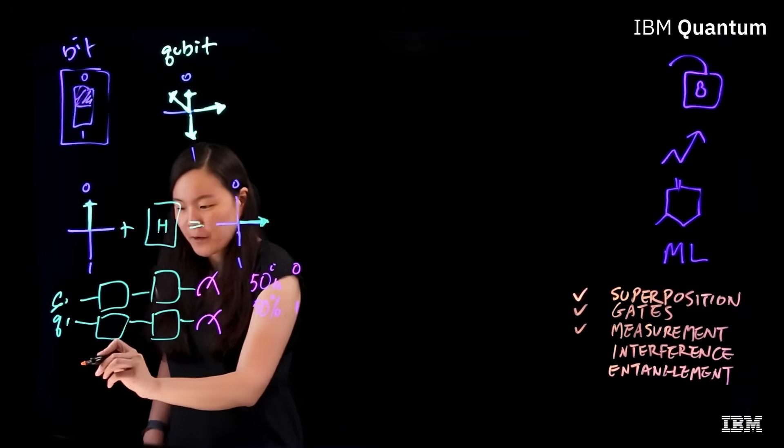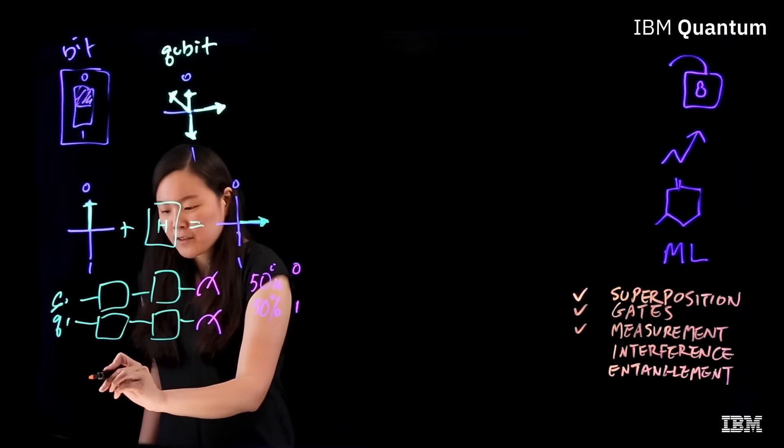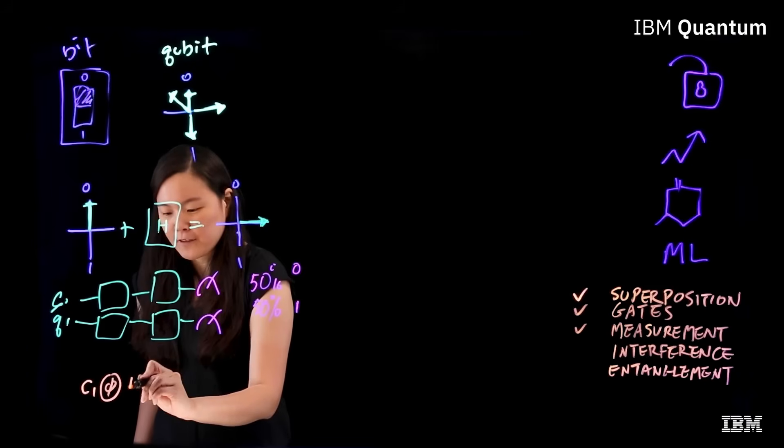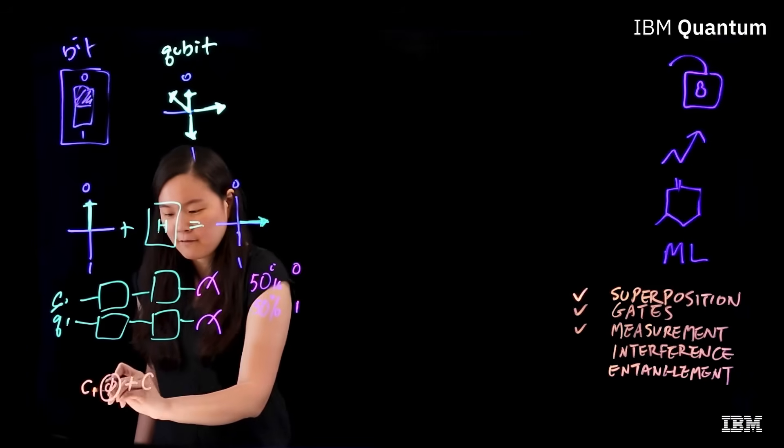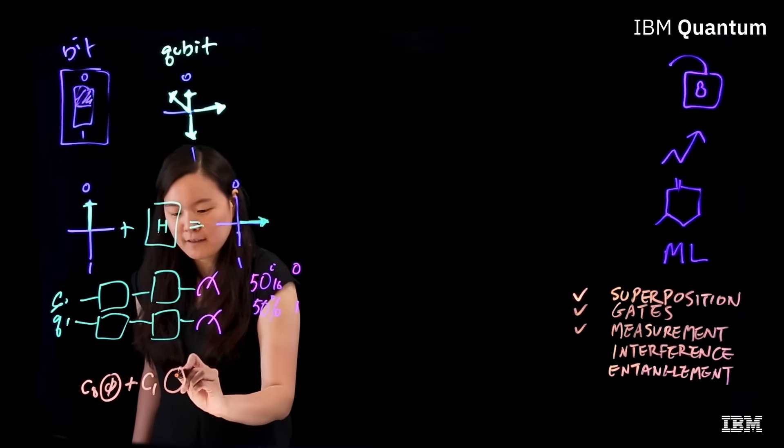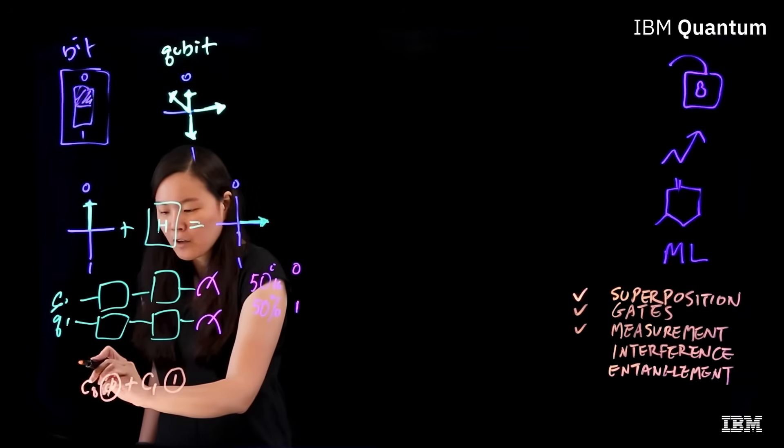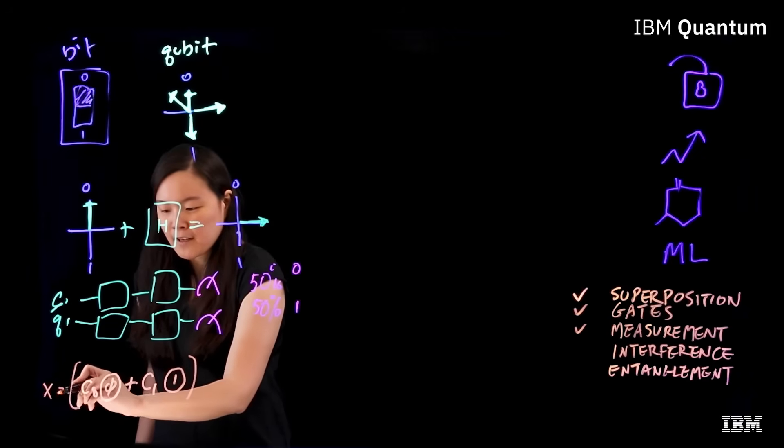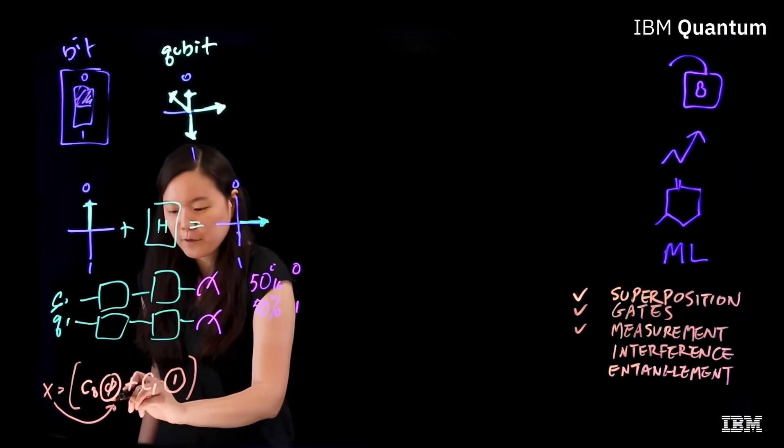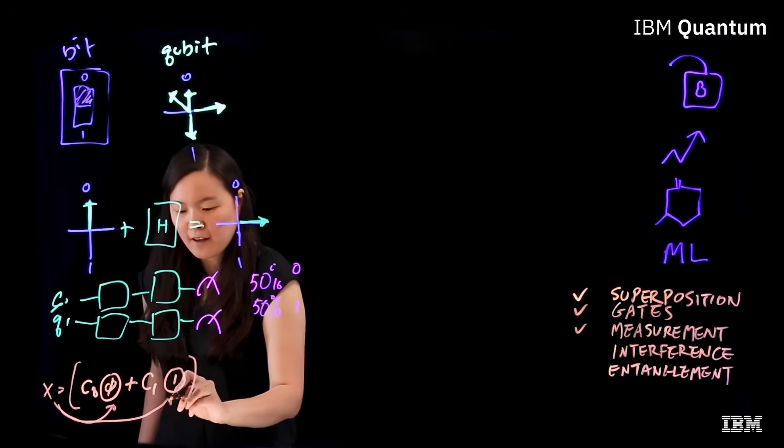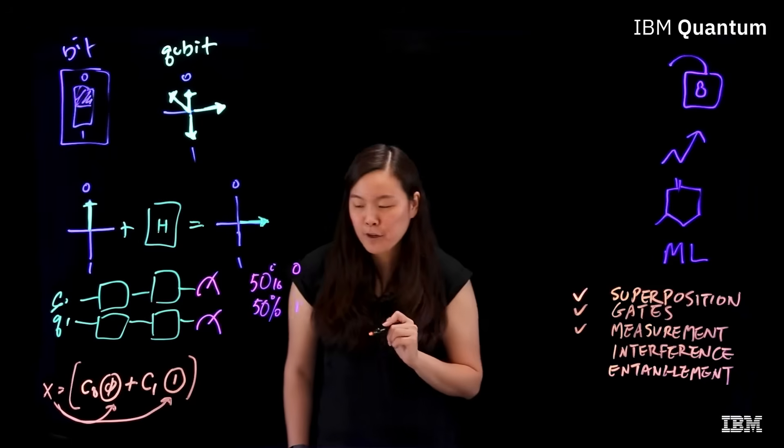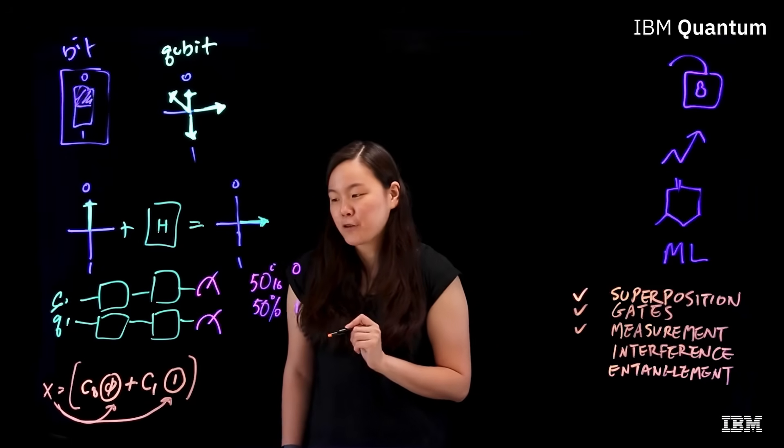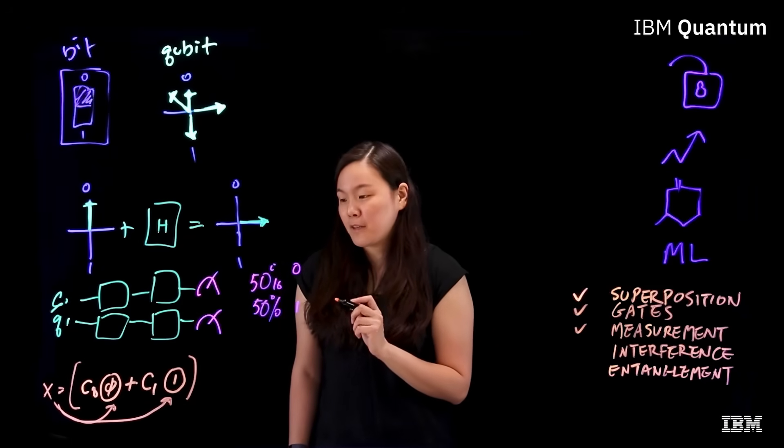So if you remember, a quantum state is a linear combination of the zero state and the one state. So an operation applied to this can be seen as applying to the zero state and the one state, doing two calculations at once. It is this parallel computation that gives quantum its unique advantage.